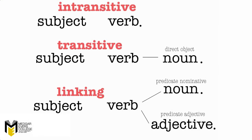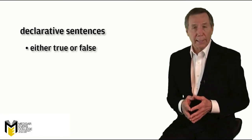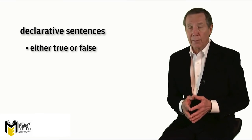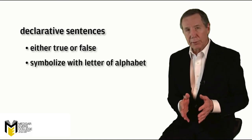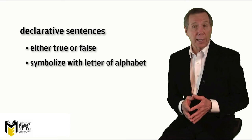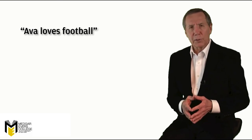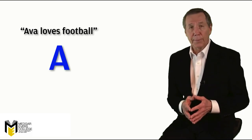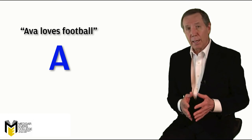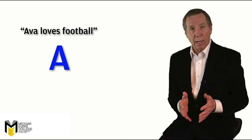We'll make things even simpler. We won't bother with the usual grammatical distinctions between the parts of a sentence, such as subject, verb, and predicate. In fact, we'll ignore the internal structure of the sentence altogether and instead treat it in the simplest possible way by symbolizing the entire sentence with a letter of the alphabet — say, the capital letter A. So for a sentence like 'Ava loves football,' we could simply use the letter A as a stand-in or substitute for it. Similarly, we can let other capital letters stand for other sentences.